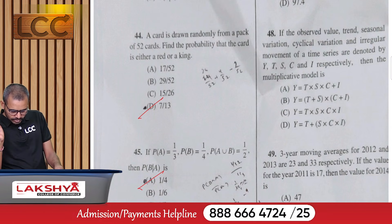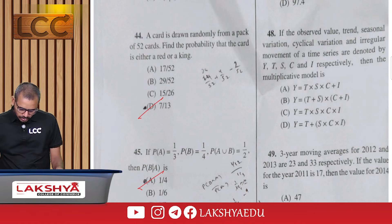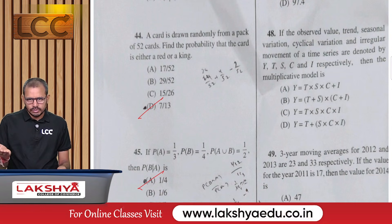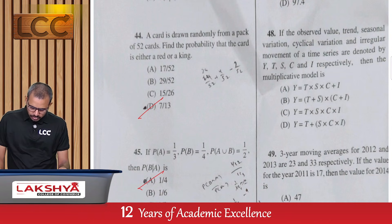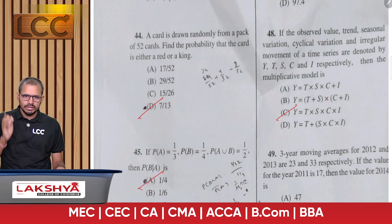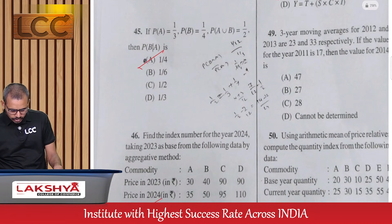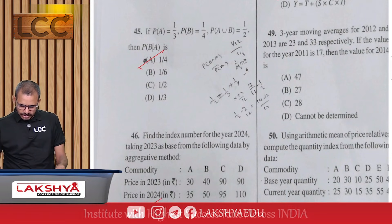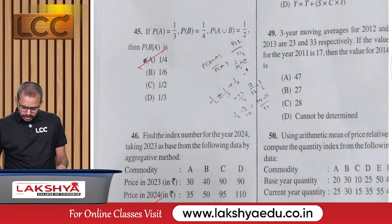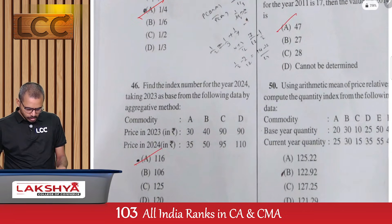Question 48: If observed values, trend, seasonal, cyclical, and irregular variations are denoted by Y, T, S, C, I respectively, the multiplicative model is Y = T × S × C × I — option C. Question 49: Three-year moving averages for 2012 and 2013 are 23 and 33 respectively. If the value for 2011 is 17, find the value for 2014 — option A.